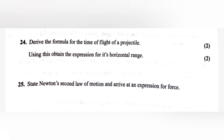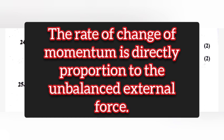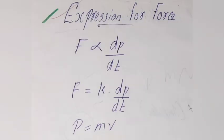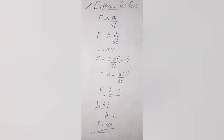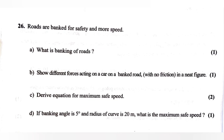Question 25: State Newton's second law of motion and arrive at an expression for force. Answer: The rate of change of momentum is directly proportional to the unbalanced external force. Expression: F ∝ dp/dt, so F = k·dp/dt. Since momentum = mass × velocity, F = k·ma. In SI units, k = 1, so F = ma.